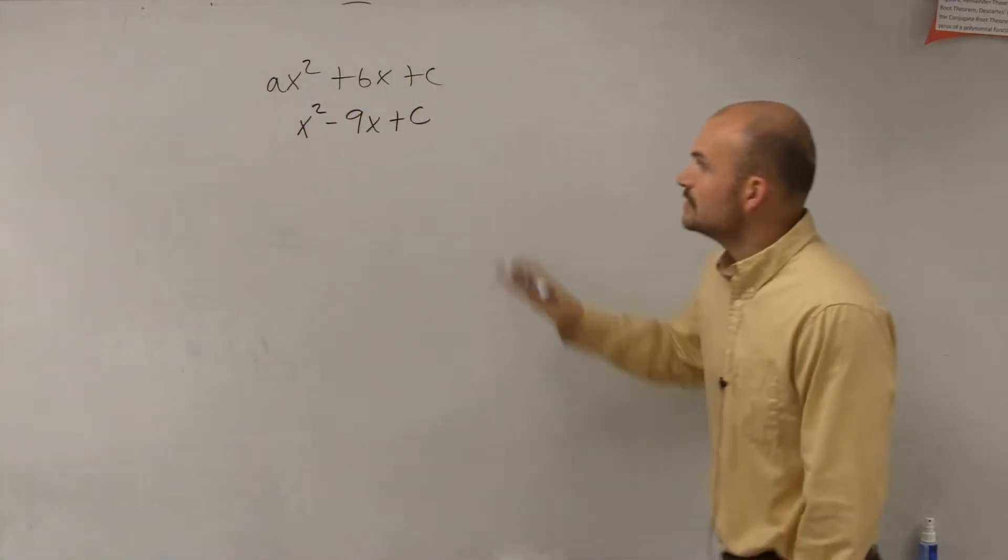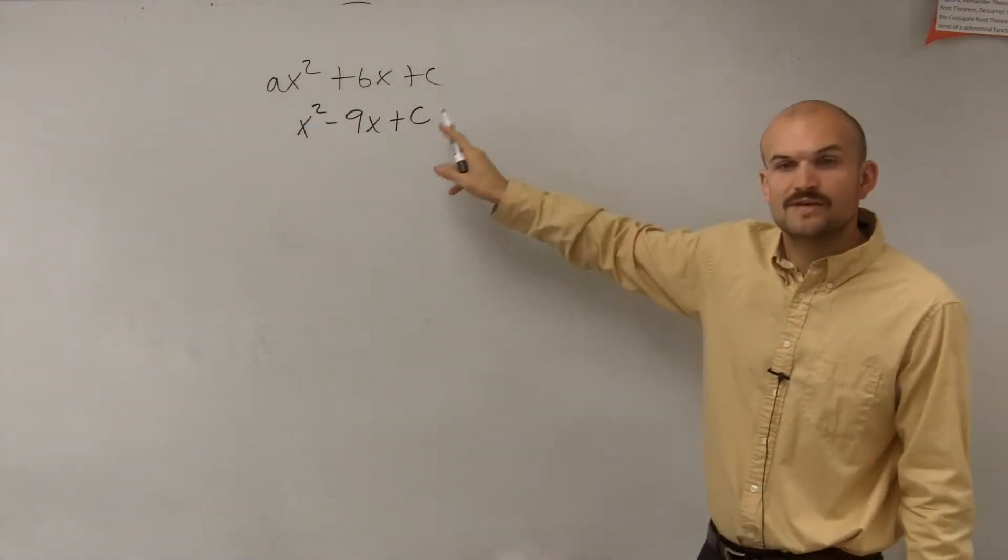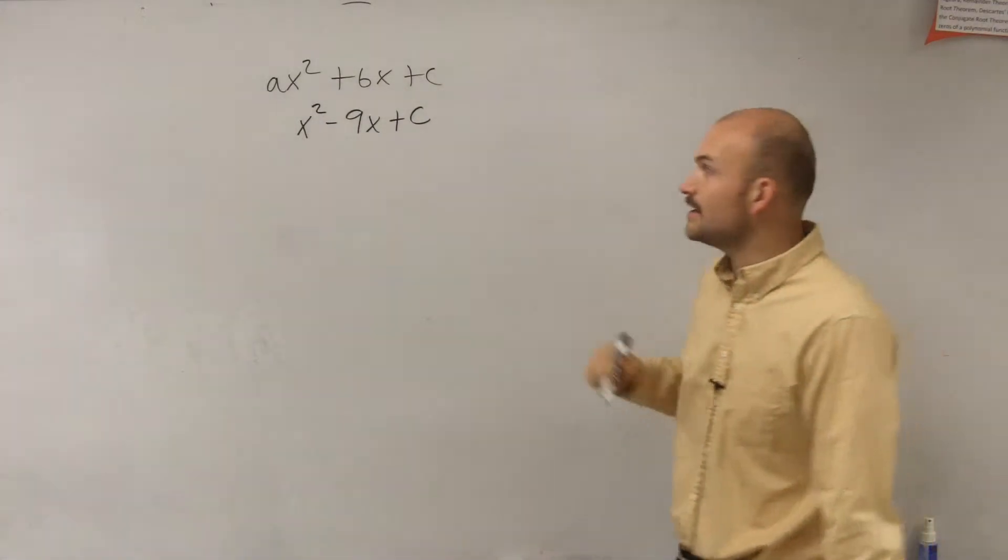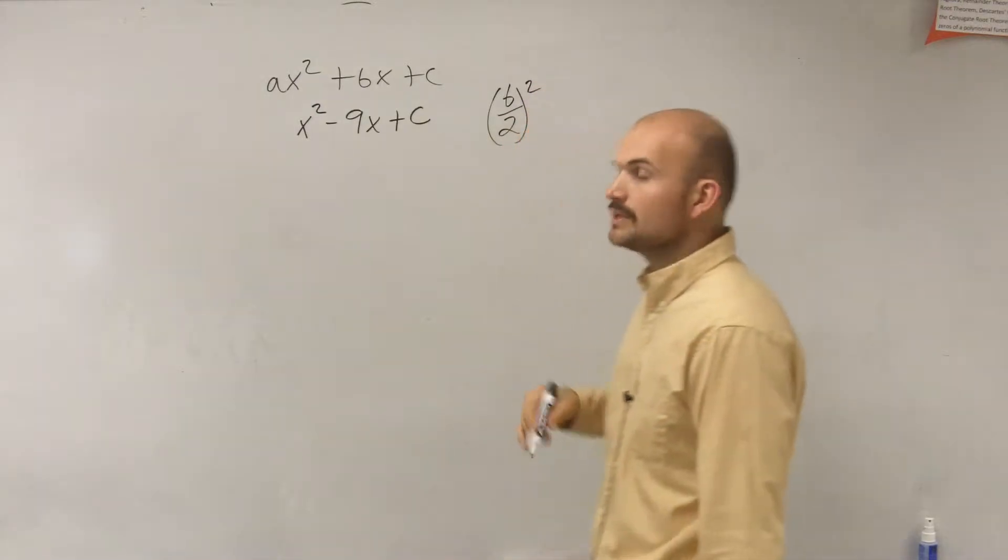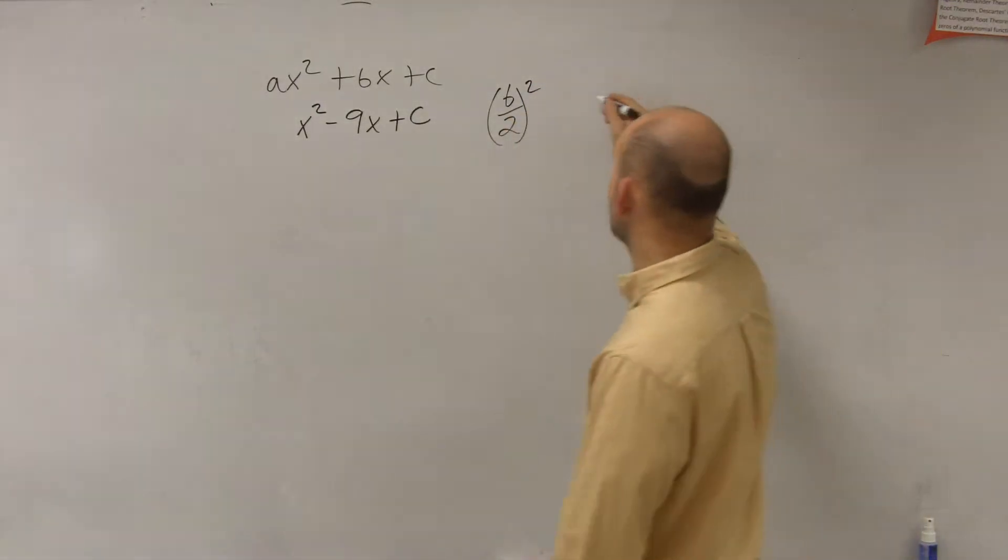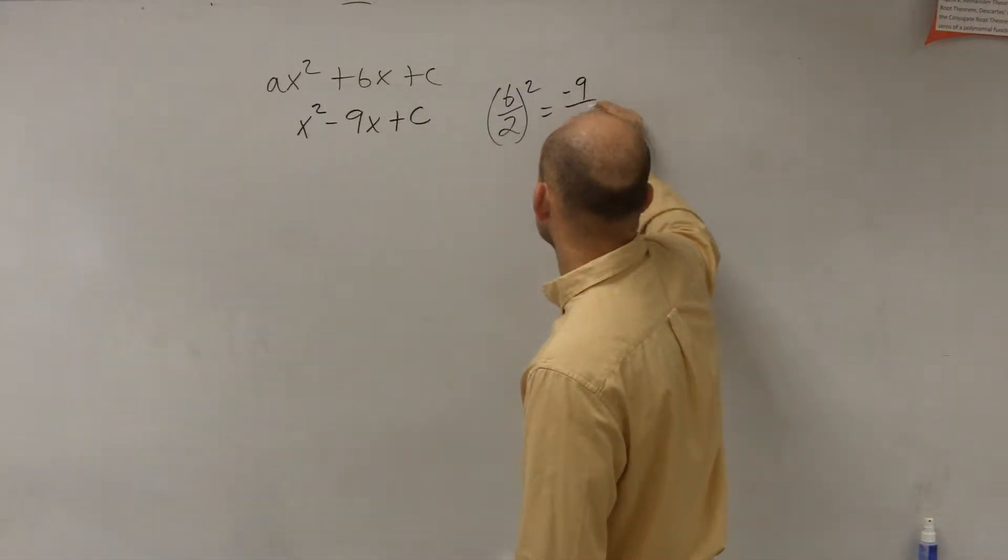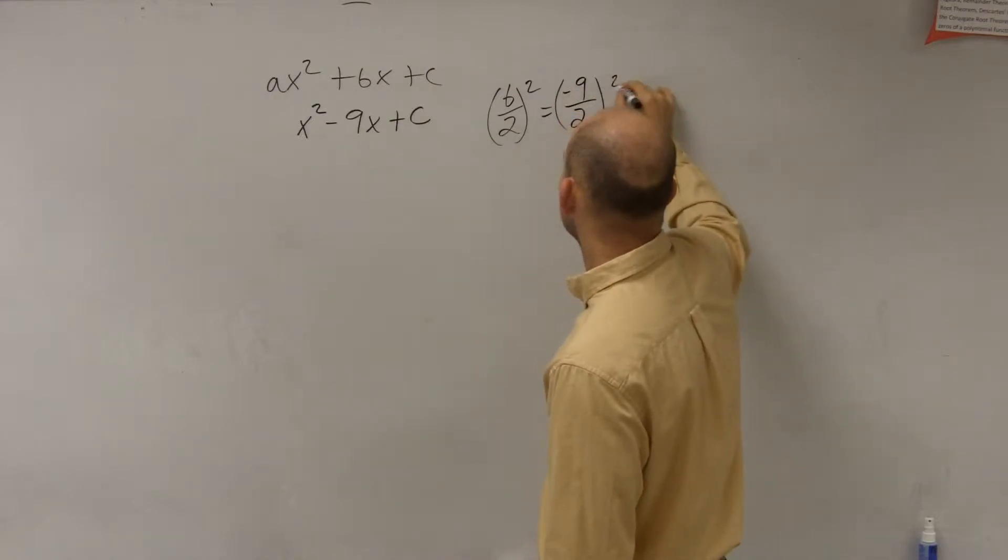What we're going to want to do to complete the square, to find our value of c that will make this a perfect square trinomial, is we simply take b divided by 2 and square it. So in this case, my b is negative 9 divided by 2, and I square it.